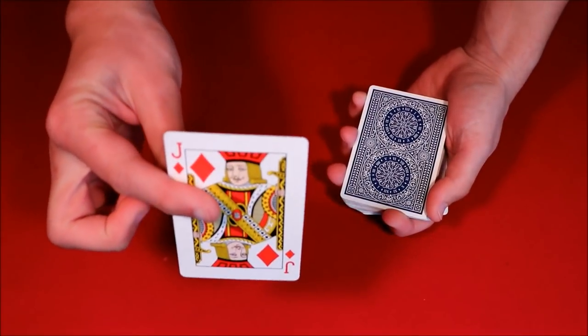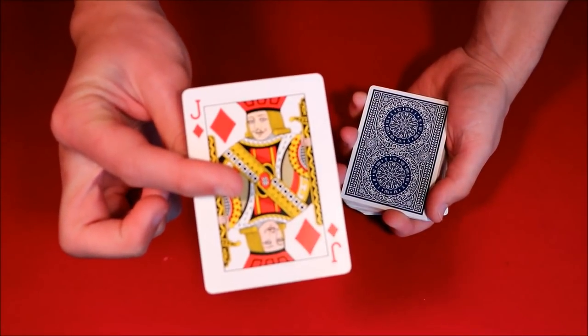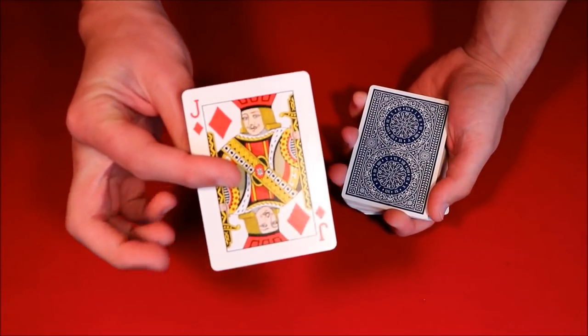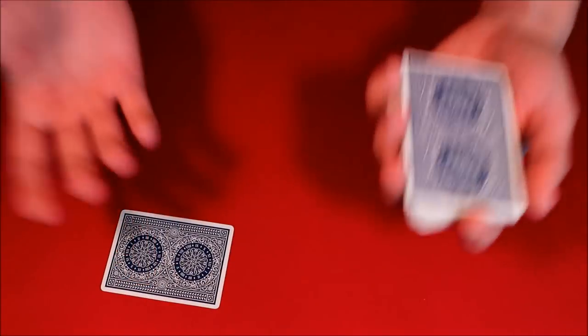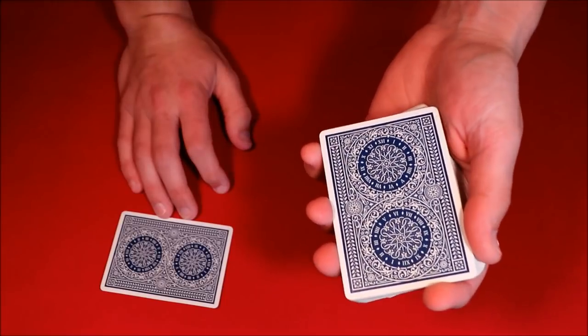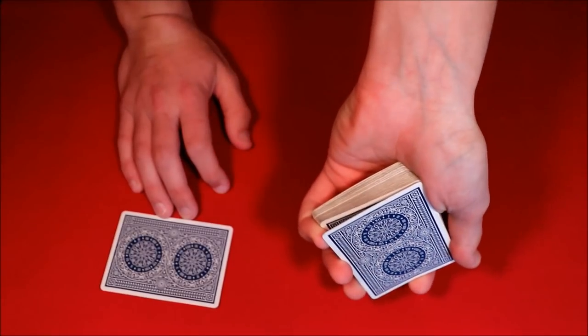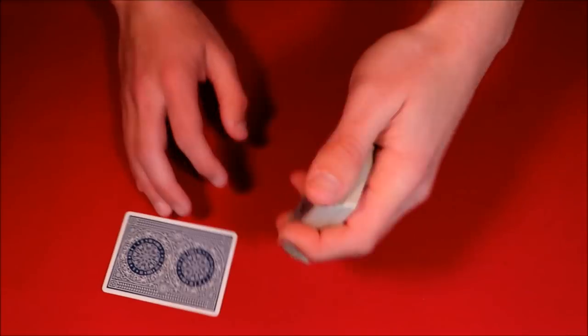So while you're showing the card to the spectator, they're going to be looking at it. Whatever card this is, in this case we have the jack of diamonds and you're not going to know what this card is until the very end of the trick. But all you have to do is, as they're looking at their card, you go ahead and get a pinky break underneath the top card just like that.